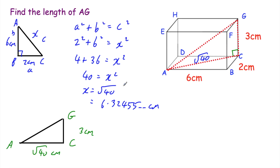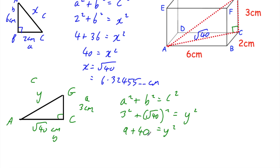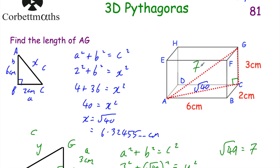I'll do a little sketch of triangle ACG, calling AG the value Y. Using Pythagoras' theorem again: A squared plus B squared equals C squared. So 3 squared plus the square root of 40 squared equals Y squared. That gives 9 plus 40 equals Y squared, so 49 equals Y squared. Square rooting gives Y equals 7, so AG is equal to 7 centimetres. The question asked us to find the length of AG and the answer is 7 centimetres.